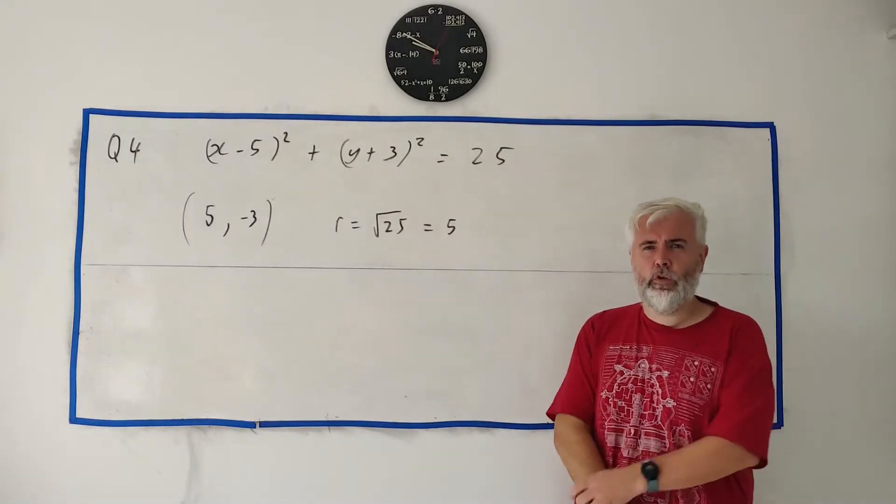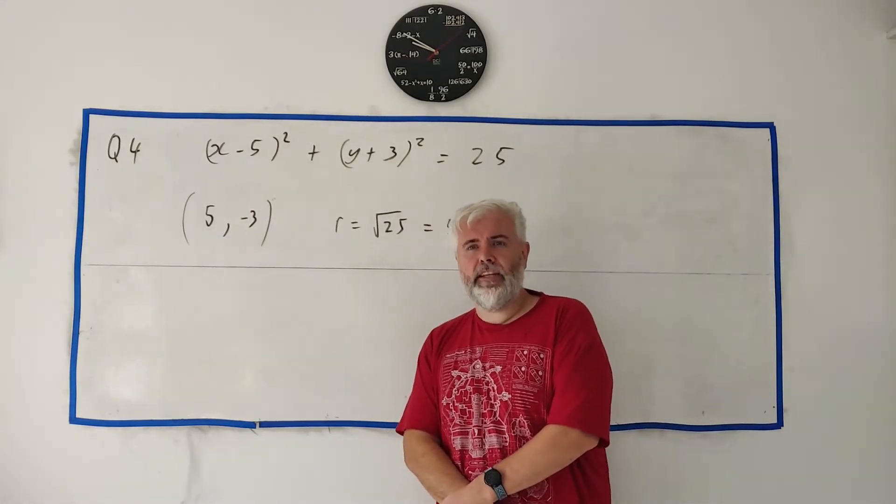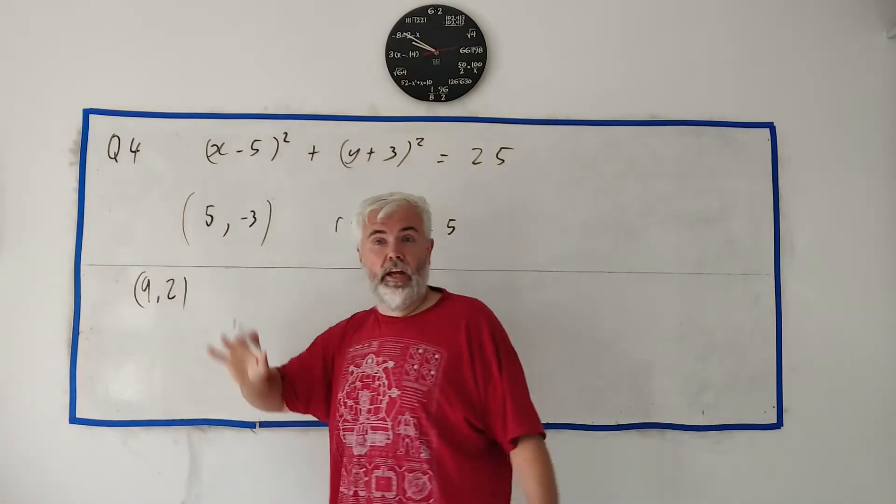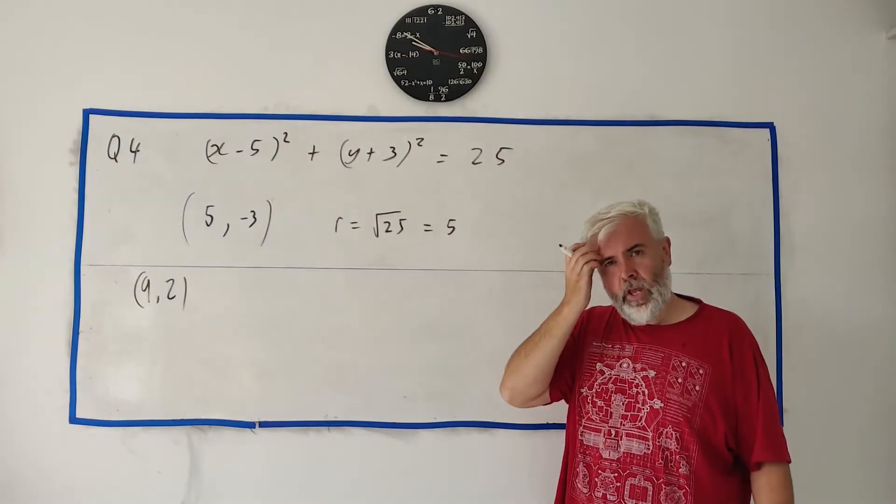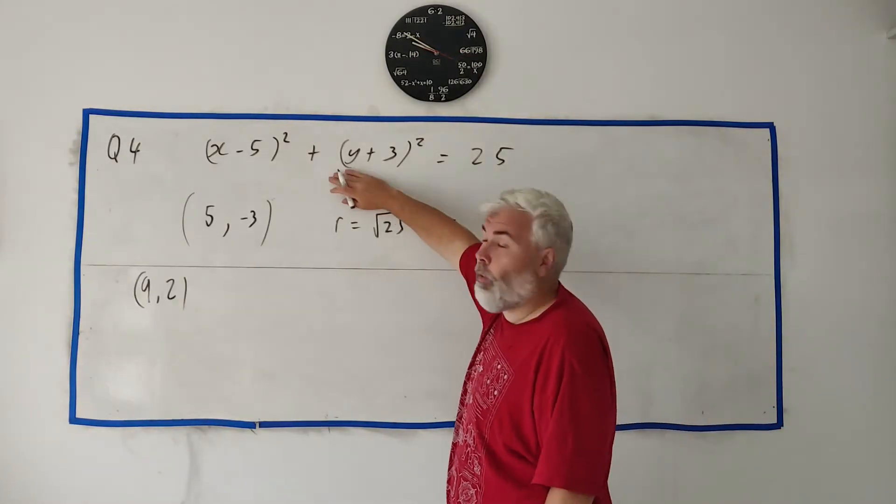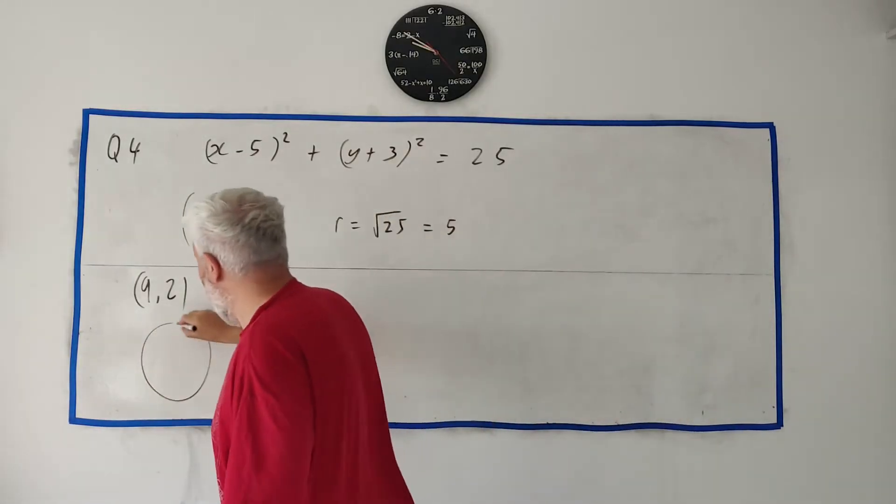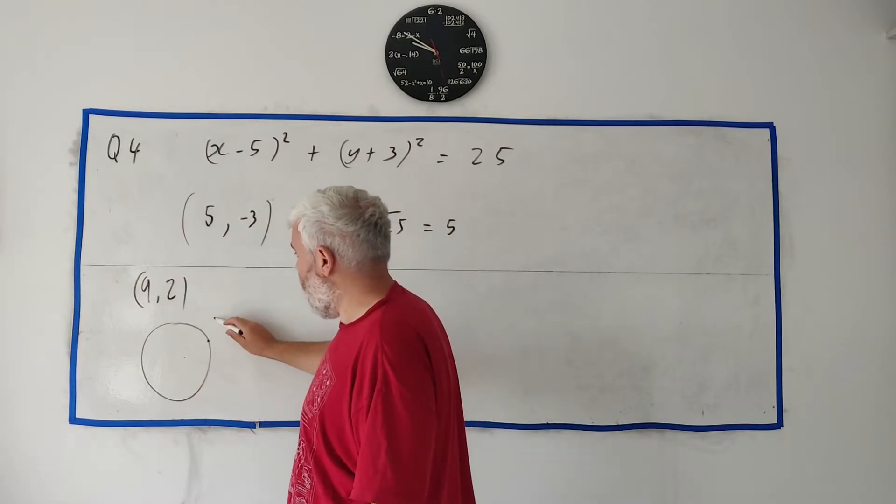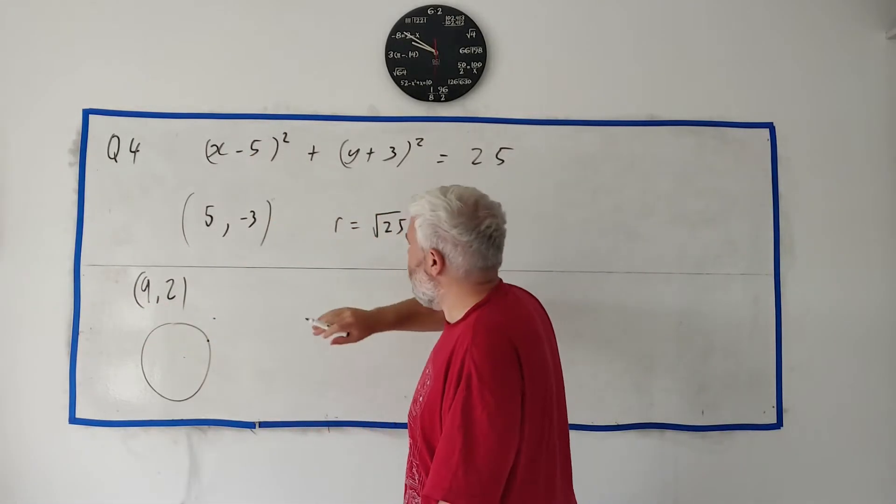And then on to Part 2. It asks using algebra investigate if the point (9, 2) is on or inside or outside the circle. So that's a great thing we can do with equations of a circle. We can tell, let me draw it here, we can tell if a point is inside, on the circle or outside, just by putting the point into this equation. So let's do that here.